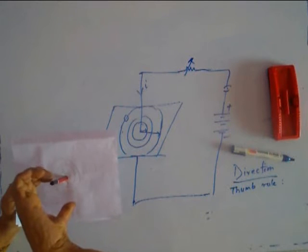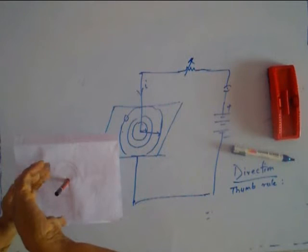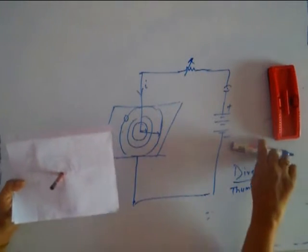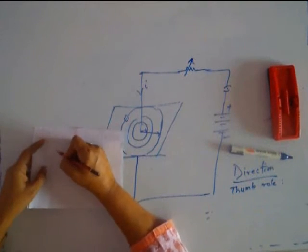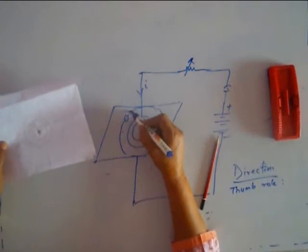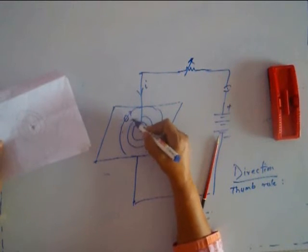In that case, the direction in which the fingers curl, go around, is the direction of the magnetic field. I must draw the magnetic field like this. How do I know? I will have to keep a compass here and the compass will show the direction, the north pole will show this direction.